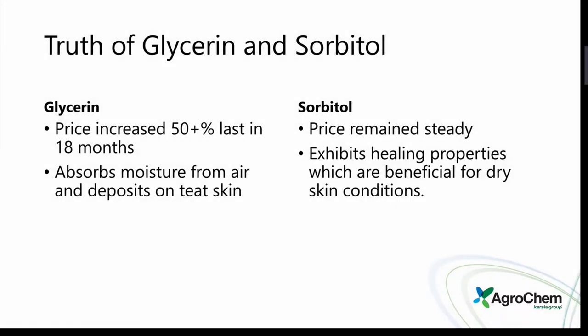Looking at glycerin and sorbitol — a few of the things that have changed this last year. In the dairy industry we have talked and used almost exclusively glycerin or glycerin blends with propylene glycols, sorbitols, lanolins, and aloe veras, and had a good mixture of that. But this year the pricing has increased 50% and greater over the last year to 18 months. We've seen the numbers really go through the roof because it is a byproduct of the diesel industry.